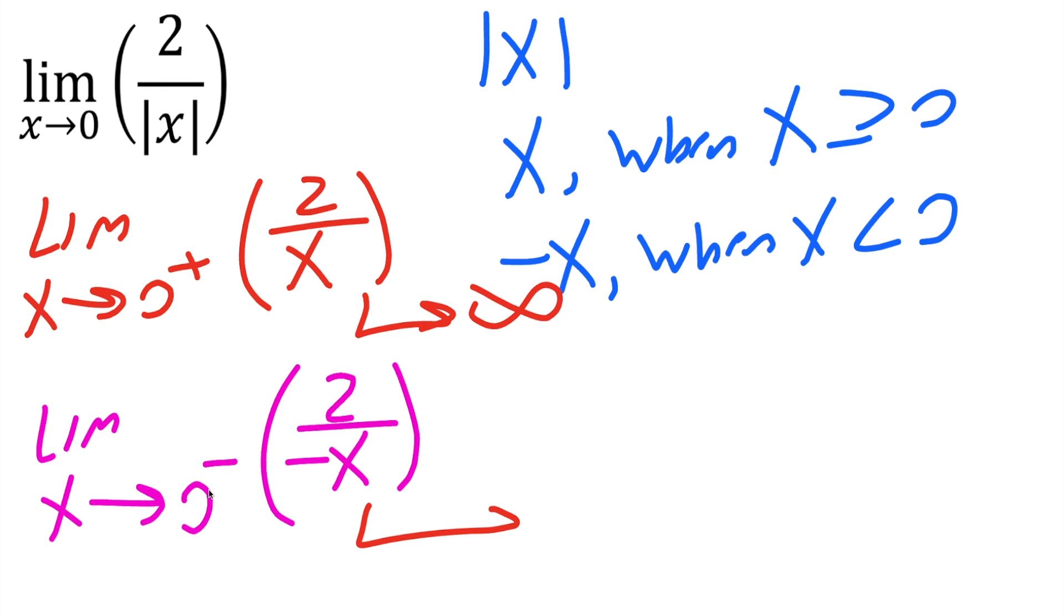It says 0 to the left. So that's like negative 0.00001 with infinite zeros. So it's a negative small number. So 2 divided by negative, a very small number. So a negative times a negative is a positive number. So it's 2 divided by a positive number. And that's also going to give us infinity.